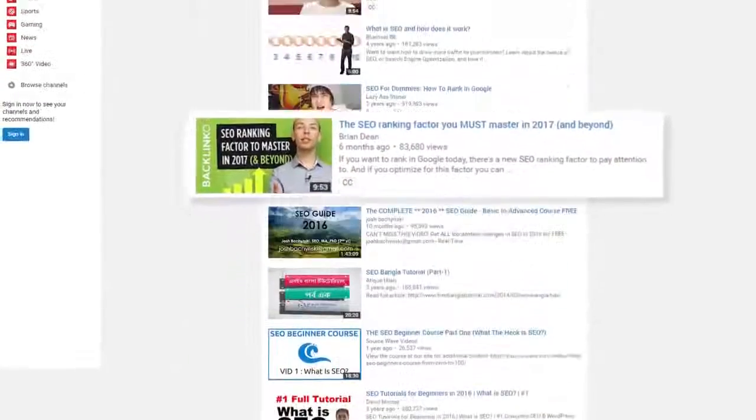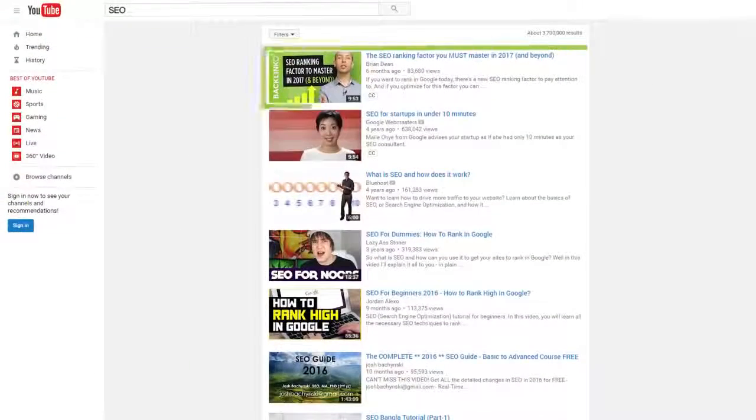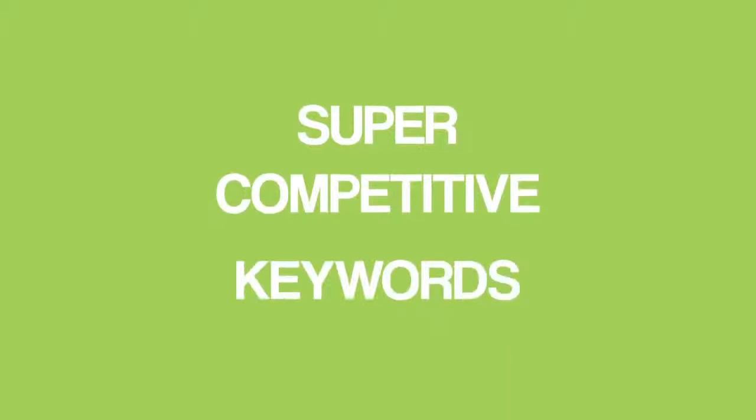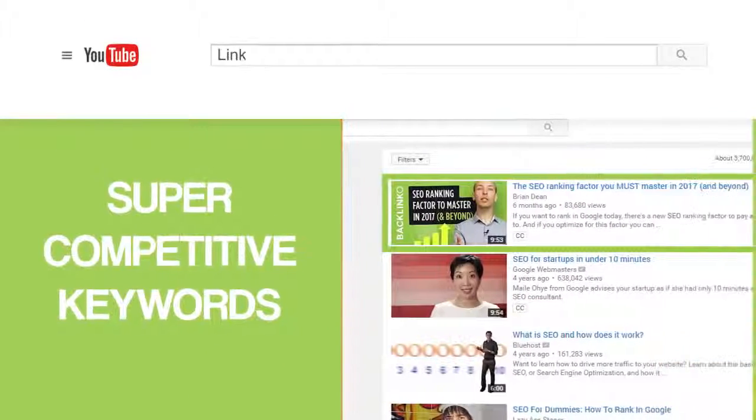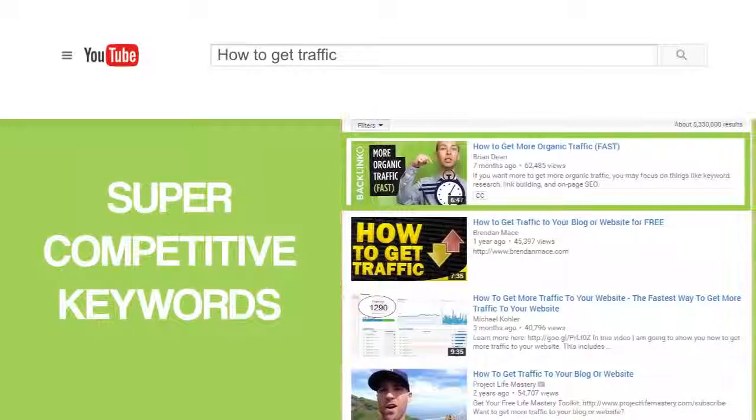After trying all the generic advice that I read and getting nowhere, I decided to run a bunch of experiments. And that's when I learned what really works. Specifically, I discovered YouTube's five most important ranking factors. And these are ranking factors that very few people know about. Once I applied these ranking factors to my videos, my rankings shot through the roof. I started ranking for super competitive keywords like SEO, link building, how to get traffic, and more. And now it's time for me to share these five ranking factors with you and show you exactly how to use them to rank your videos in YouTube.